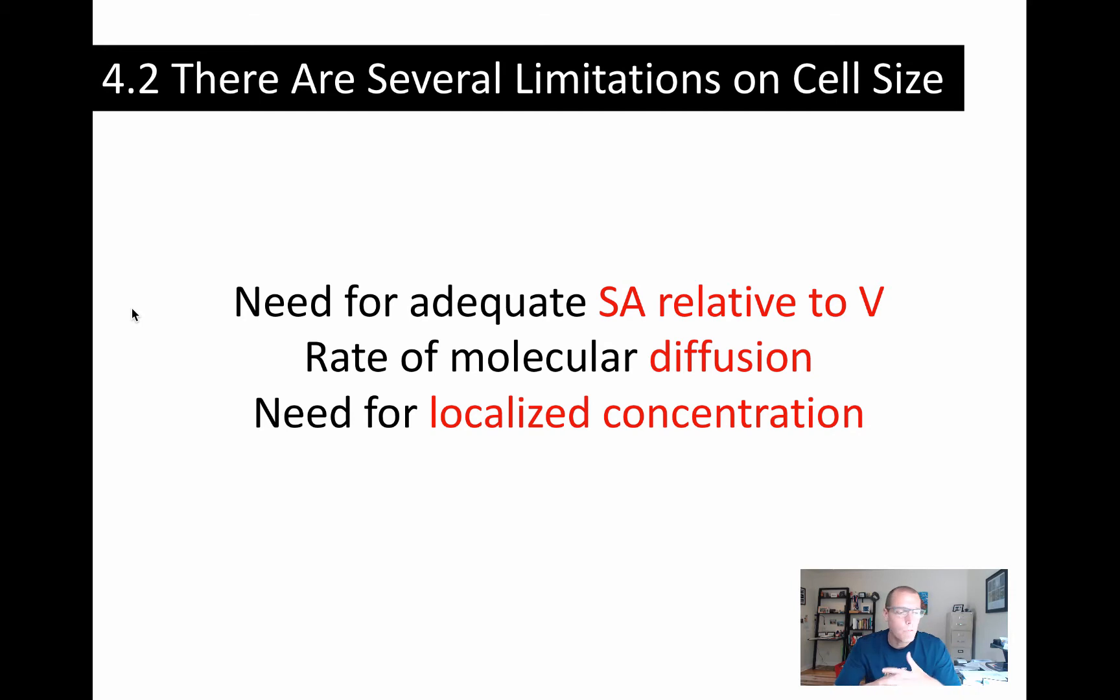Eukaryotic cells, animal cells specifically here, they're ranging from about 10 to 100 micrometers. So a mammalian egg in humans, it's about 100 micrometers, 0.1 to 1 millimeter in length. But then there are some larger animal cells, frog eggs, for example. They can be significantly larger.